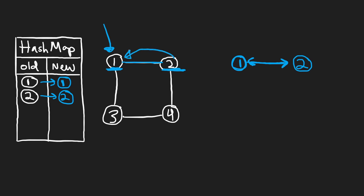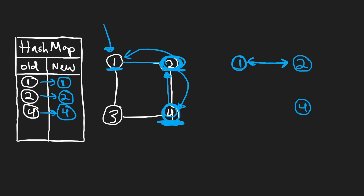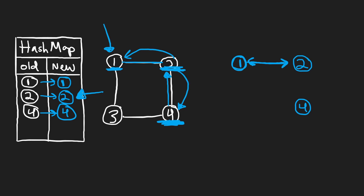We also know we have to clone node four, so we visit node four and create a clone for it, adding it to our hash map by mapping the original node four to its clone. Now for node four's neighbors: four has a neighbor two, which we already cloned. So we look up two in our hash map, see we already created a clone of it, and connect four to two — making this edge go both ways since the edges are undirected.